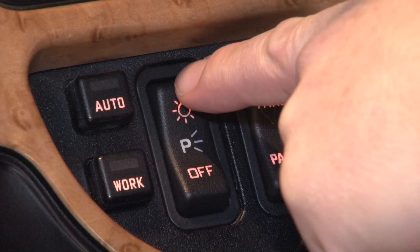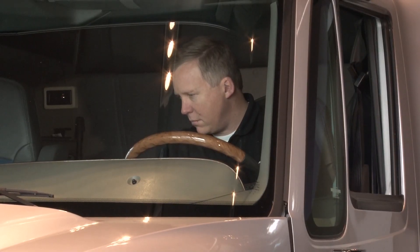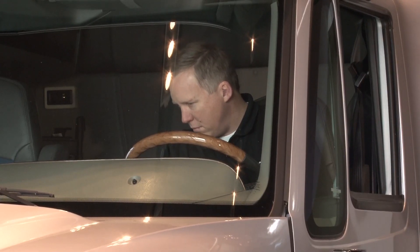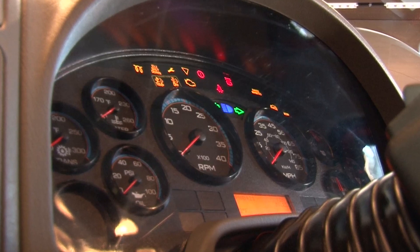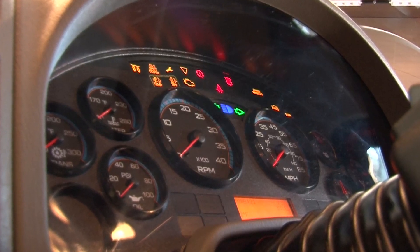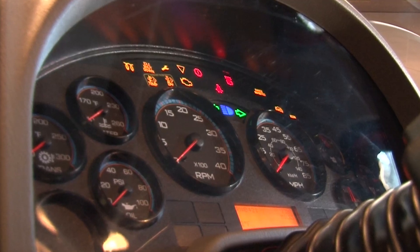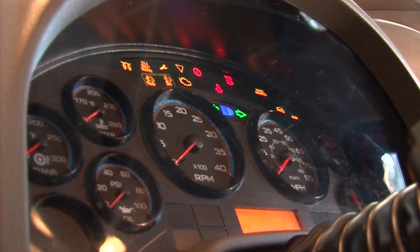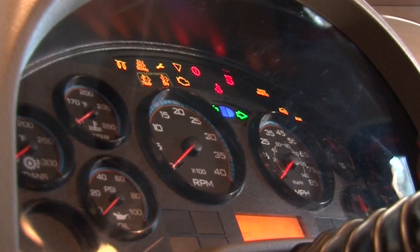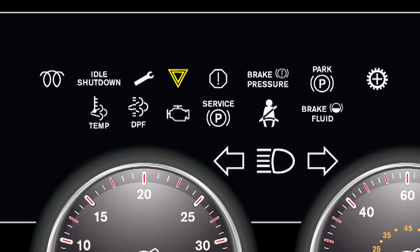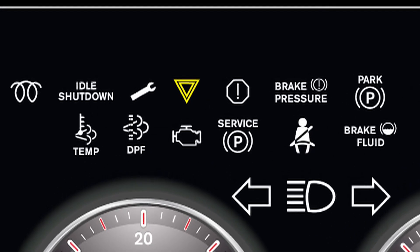Other important switches include the lights and mirrors. One of the most important things to know about international trucks is what all the lights on the dash mean. Some indicate problems with the truck or engine, while others simply let you know the truck is performing some routine action. It's important to know the difference to save time and cost. The engine warning light means that some condition within the engine, such as a pressure or temperature, has reached a warning level.